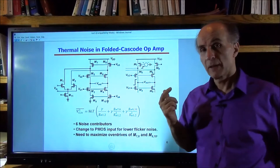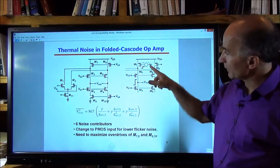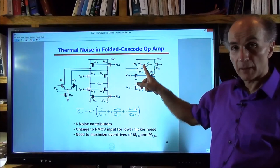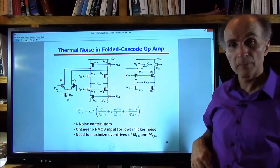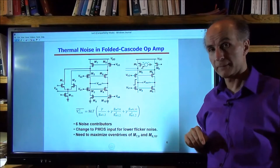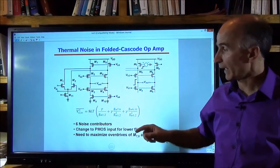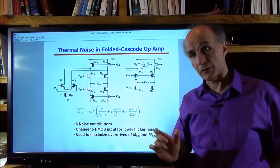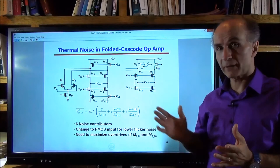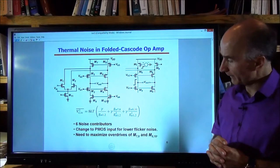If there's a step at M7's gate, this current changes and there will be a significant change at the output, because we have a cascode amplifier from that point to the output. So indeed the noise of M7 does contribute to the output. What's interesting is that in the folded cascode op-amp we have six significant noise contributors — M1, M2, M7, M8, M9, M10 — whereas in the telescopic cascode op-amp we had only four contributors: the input devices and the current sources on top. So that's one disadvantage of folded cascode over telescopic cascode.